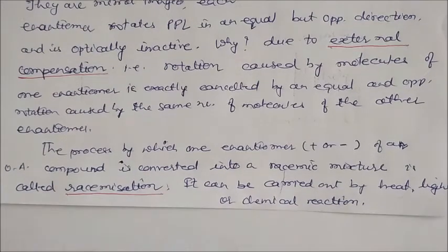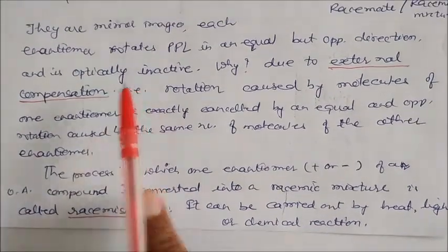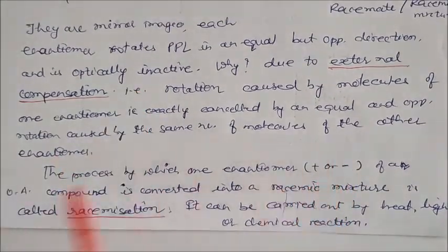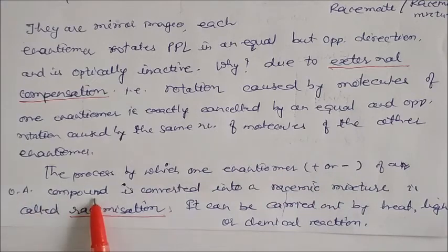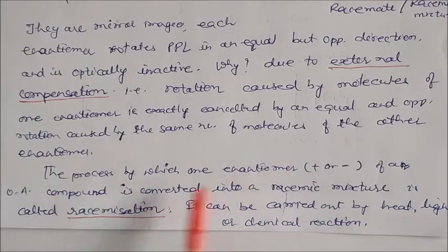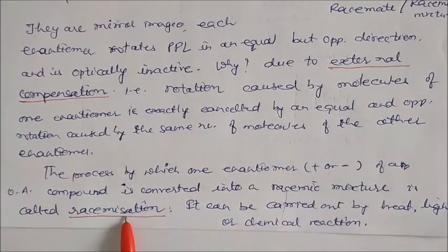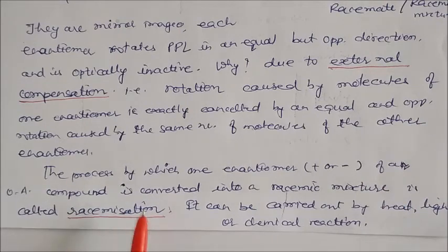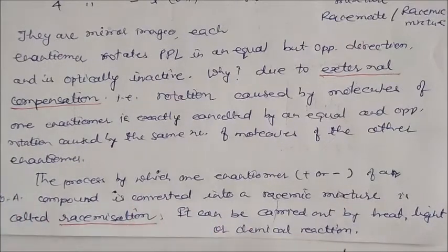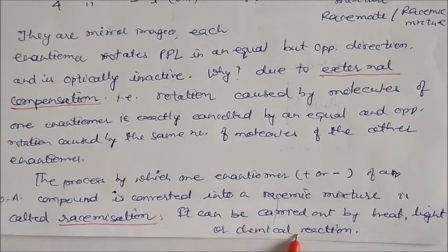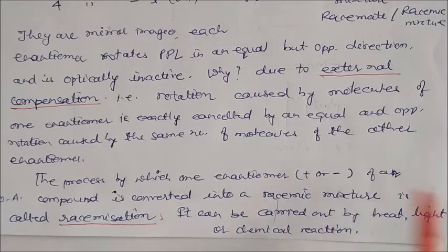The process by which one enantiomer — like plus or minus — of an optically active compound, like D or L, is converted into a racemic mixture is called racemization. This process can be carried out in the presence of heat, light, or any chemical reactions — so racemization is done by these three different types of conditions.